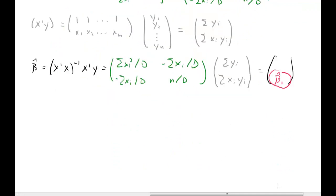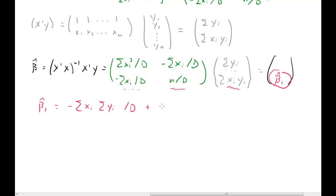In the matrix form, the variance of beta hat is sigma² * (X'X)^{-1} — a formula you just need to know. For the observation-wise form, the variance of the j-th element of beta hat is sigma² divided by SST_j * (1 − R²_j), where R²_j is the R-squared from regressing the j-th variable on all other variables.